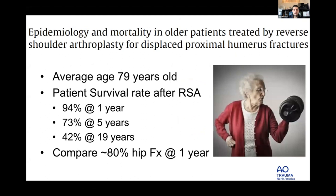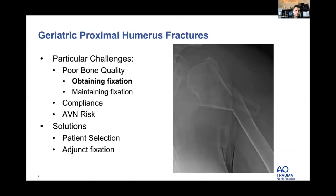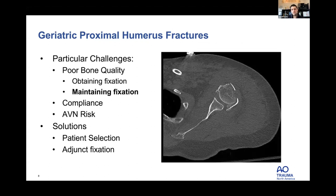Poor bone quality in geriatric patients: you can barely see the difference between soft tissue and bone — it's going to be really challenging to obtain and maintain fixation. You can put a Schanz pin in and it rips right through. Looking at CT, the humeral head piece is very thin — maybe two or three threads into the piece in some areas before reaching subchondral bone. A tuberosity with stitches in it can tear right through the bone.